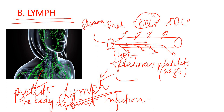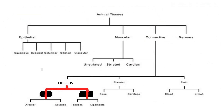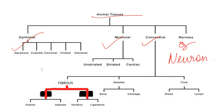Please re-watch this video once again. We are done with animal tissues — epithelial, muscular, and connective tissue. Don't forget that fluid connective tissue is under connective tissue. In the next video, we will be studying the last part of animal tissues — that is the nervous tissue, or in short, neuron. Please keep re-watching these videos and make notes so that it becomes helpful before exams.